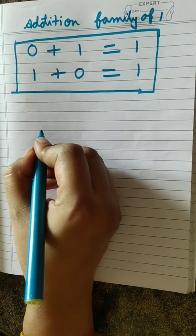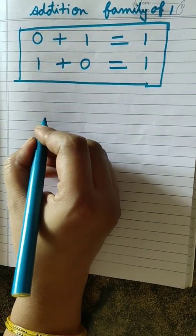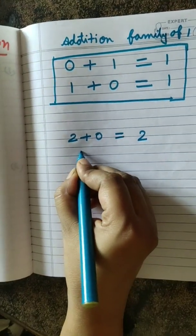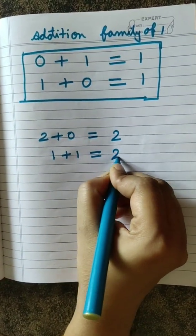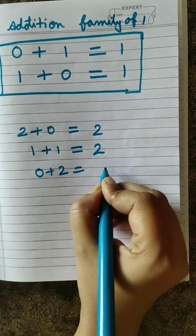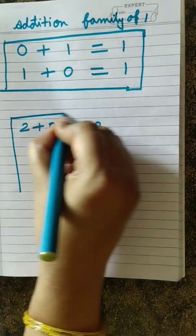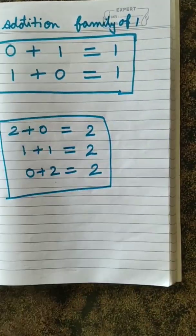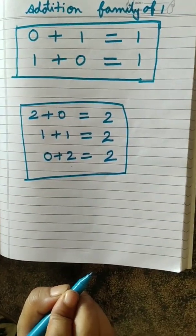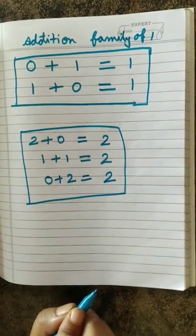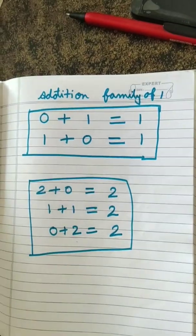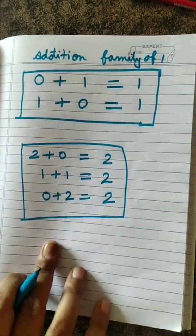Now, we will talk about addition family of number 2. 2 plus 0. What will be there? 2. 1 plus 1. What will be the answer? 2. 0 plus 2. What will be the answer? 2. Just like this. You all have to write the addition family. Till the number 9. Till the number 9.